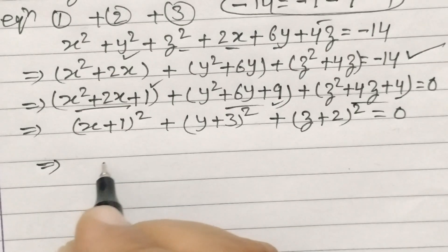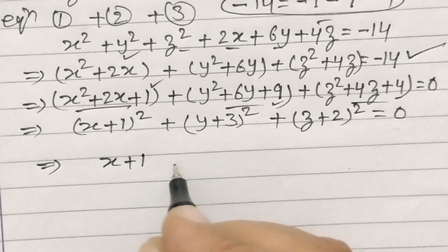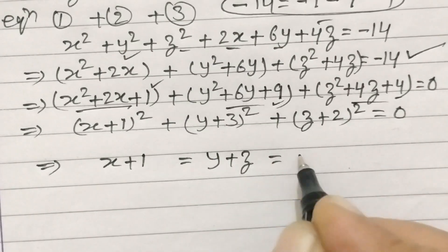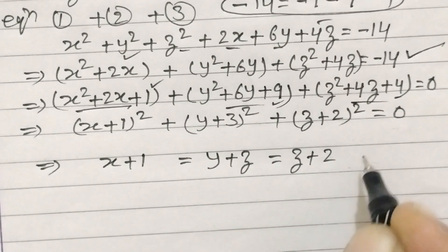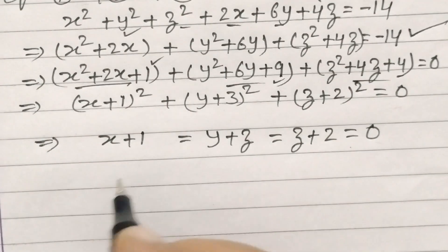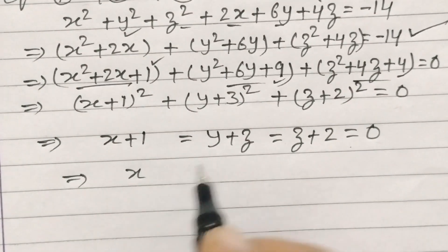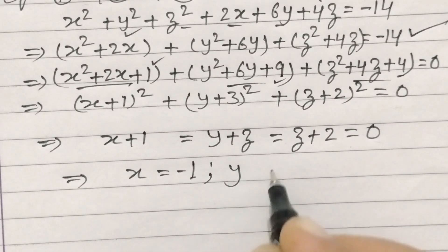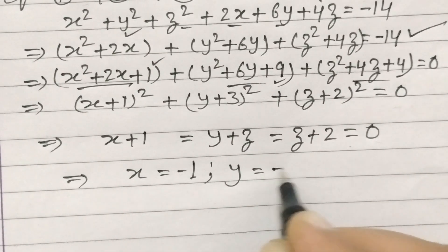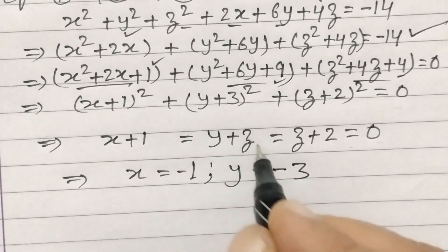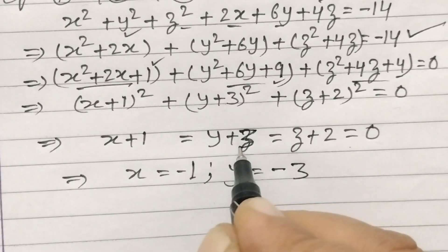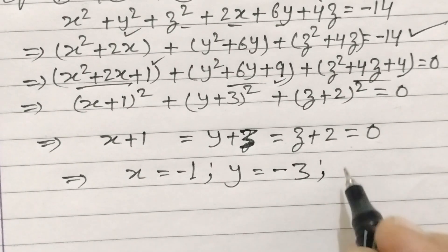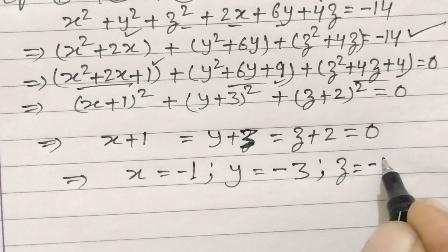So x plus 1 is equal to 0, y plus 3 is equal to 0, and z plus 2 is equal to 0. So x is equal to minus 1, y is equal to minus 3, and z is equal to minus 2.